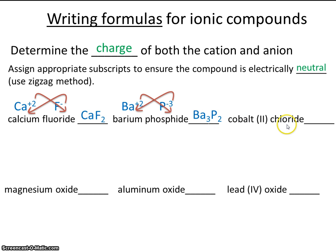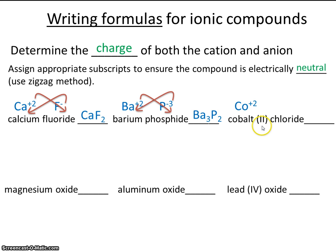We have cobalt 2 chloride. Most students think the Roman numeral 2 means there are 2 cobalts, but you know that this Roman numeral 2 does not tell us how many cobalts there are — rather, it tells us the charge on cobalt. So cobalt here has a charge of plus 2. Cobalt is a transition metal, so there's no way of knowing its charge unless it's given to you. Chloride is in group 7A and always has a charge of minus 1. So when we zigzag, it's CoCl2 — you need 2 chlorides to balance out 1 cobalt.